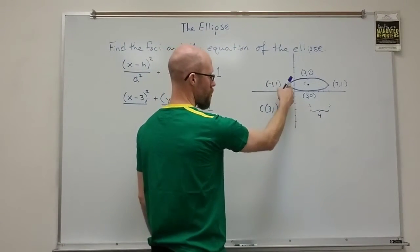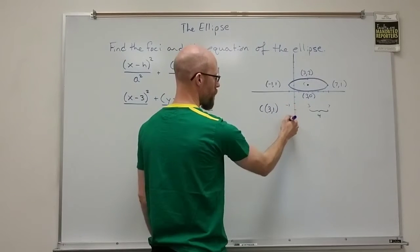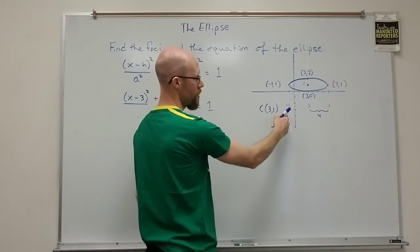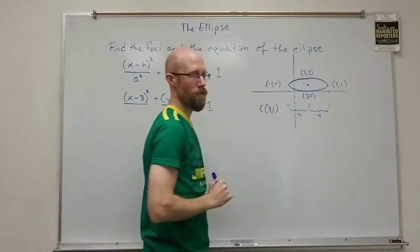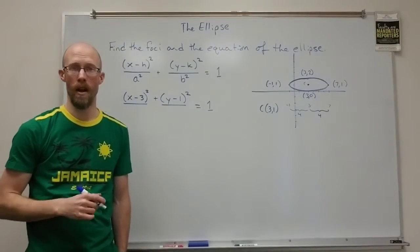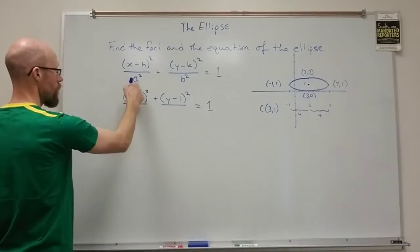Same with the distance from the center over to the other vertex on the left which is at negative 1. That distance also is 4. So it's the 4 that gives us our a value. So in this case a is 4.